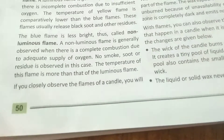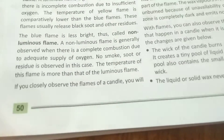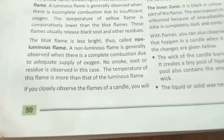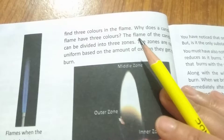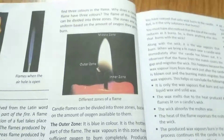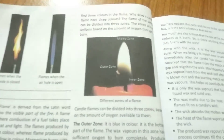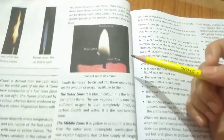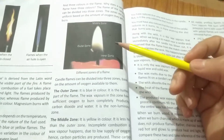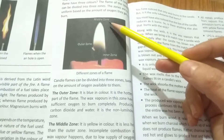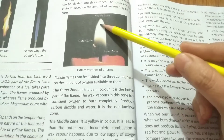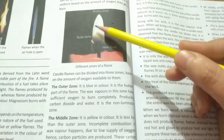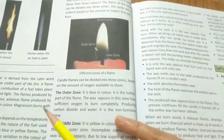If you closely observe the flame of a candle, you will find three zones of color in the flame. Look at this image — there is the inner zone, the middle zone, and the outer zone. The inner zone is black in color.